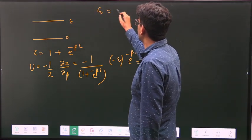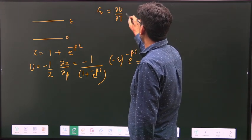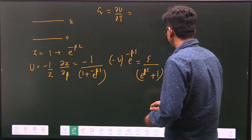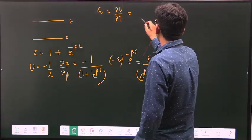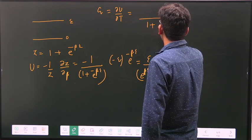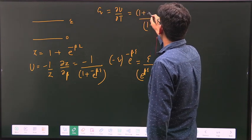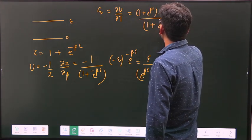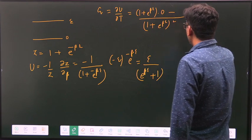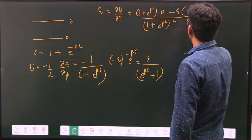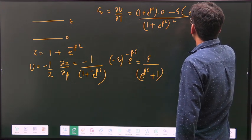Now we want a specific heat which is given by dU/dT, and it will be given by denominator square, which is (1 + e^(βE))^2, then denominator 1 + e^(βE), differentiation of numerator minus numerator differentiation of denominator.